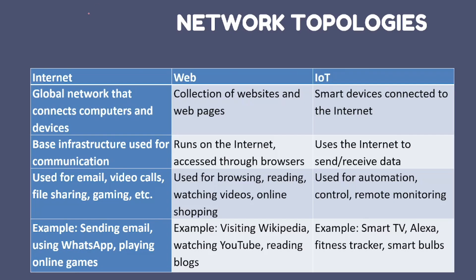The difference among internet, web, and IoT: The internet is a global network connecting computers and devices — a base infrastructure used for communication such as email, video calls, file sharing, and gaming. The web is a collection of websites and web pages accessed through a browser on the internet, used for browsing and reading. IoT — Internet of Things — involves smart devices connected through the internet to send or receive data, used for automation and control. An example is Alexa.